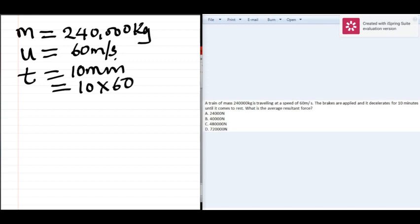Until it comes to rest - once we brake, it comes to rest - the final velocity equals zero. We have to find the force. The equation that relates force and speed acceleration is F equals m times v minus u over t.